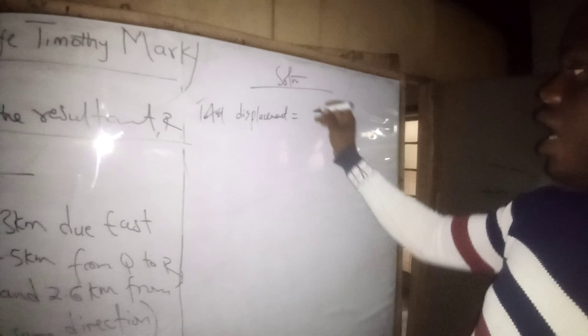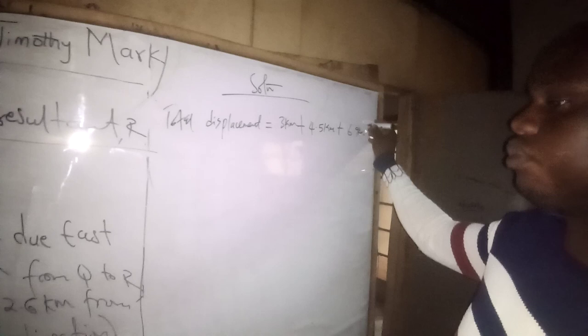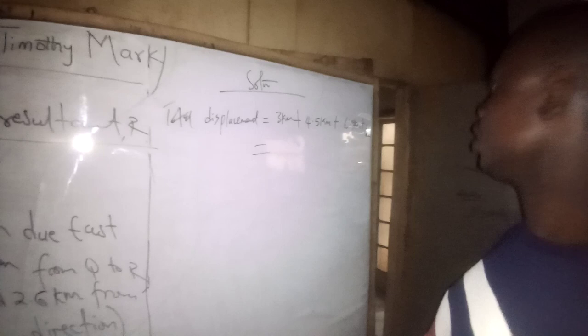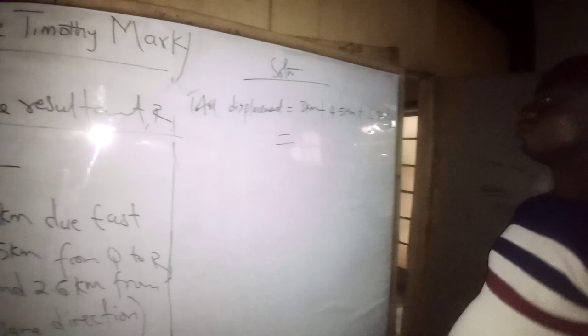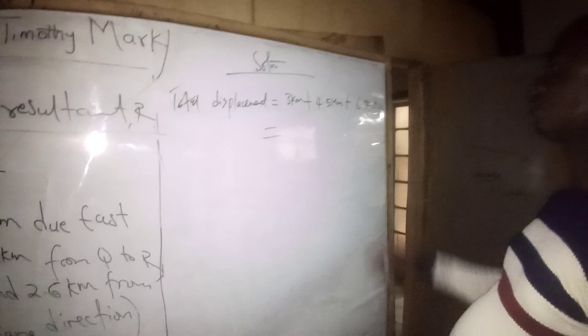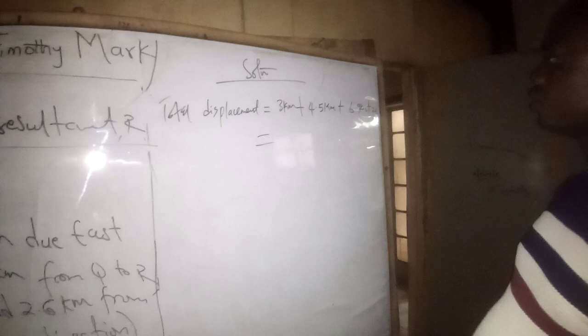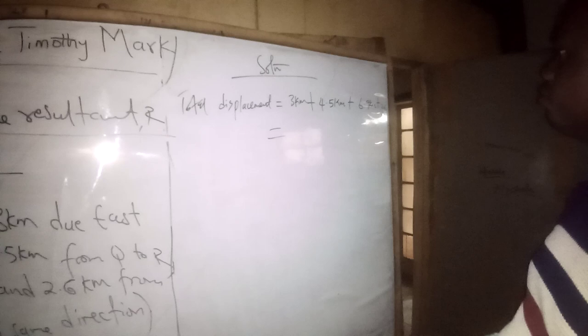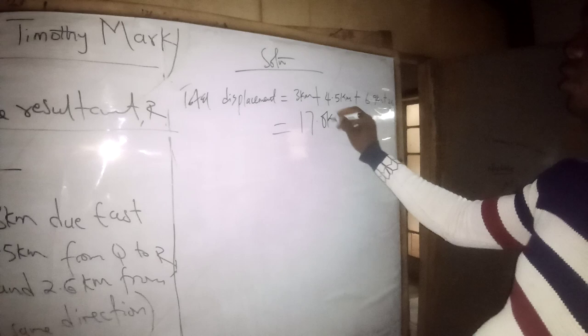Total displacement equals 3 km plus 4.5 km plus 6.6 km plus 2.6 km. Add the whole number parts: 3 + 4 + 6 + 2 = 15. Add the decimal parts: 0.5 + 0.6 + 0.6 = 1.7... resulting in a total of 17.0 kilometers. The answer is 17.0 kilometers due east.